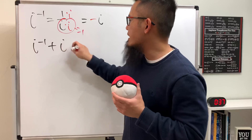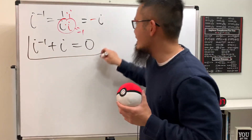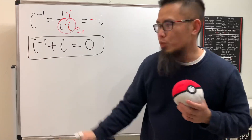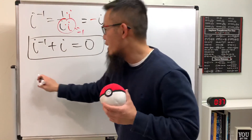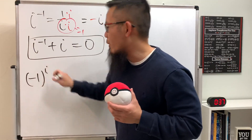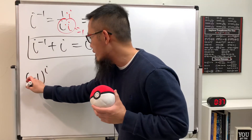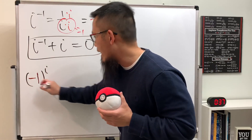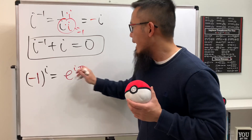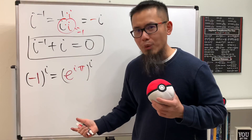Moving this to the other side, we get i to the negative one plus i, which is nicely equal to zero. How pretty is this! Now for the second equation, we look at negative one to the i power — just the principal value. Negative one is actually the same as e to the i pi, and then we raise that to the i power.